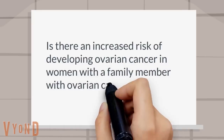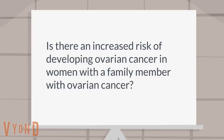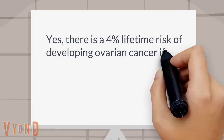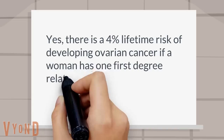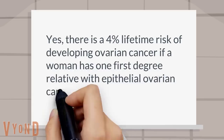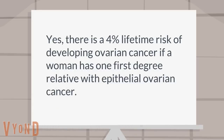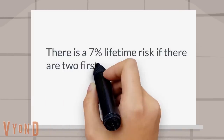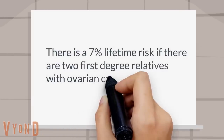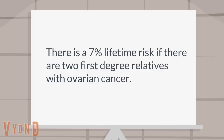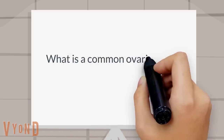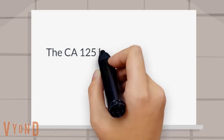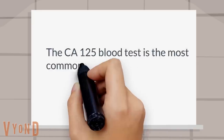Is there an increased risk of developing ovarian cancer in women with a family member with ovarian cancer? Yes. There is a four percent lifetime risk if a woman has one first-degree relative with epithelial ovarian cancer, and a seven percent lifetime risk if there are two first-degree relatives with ovarian cancer.